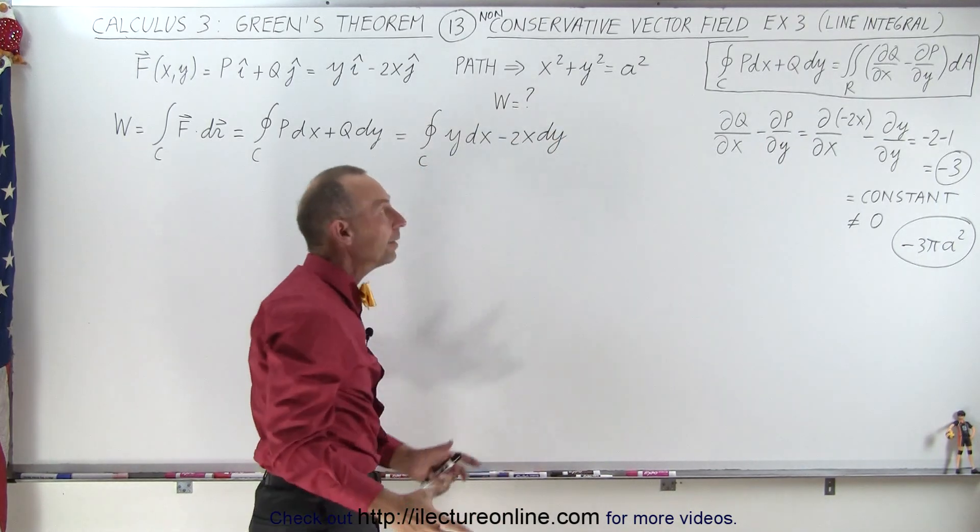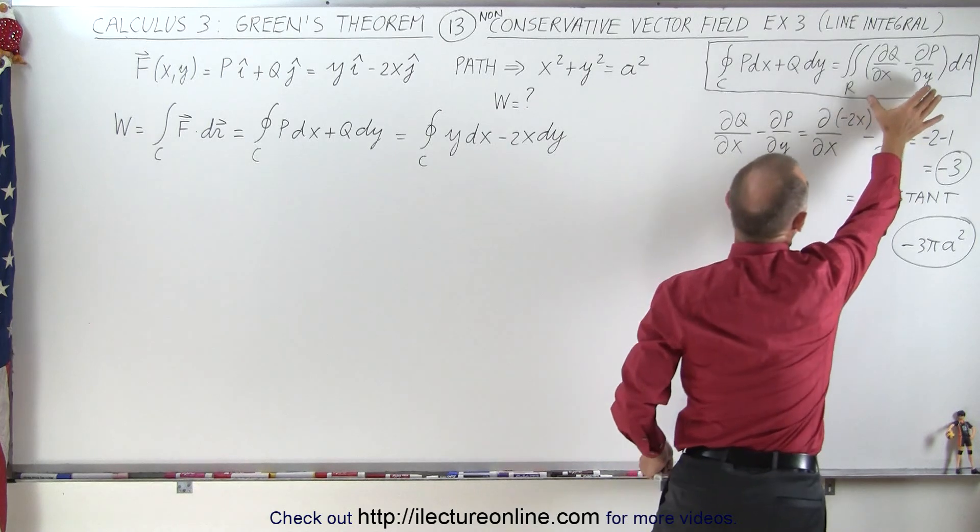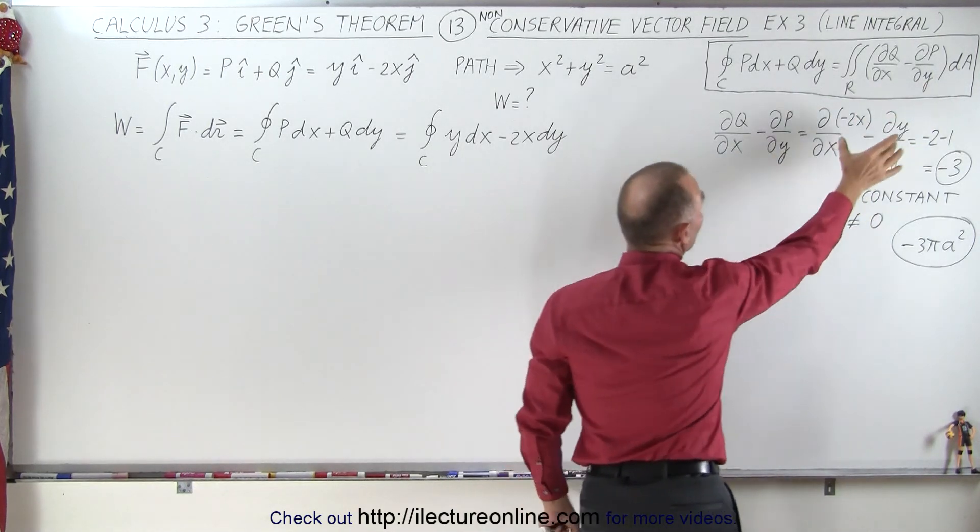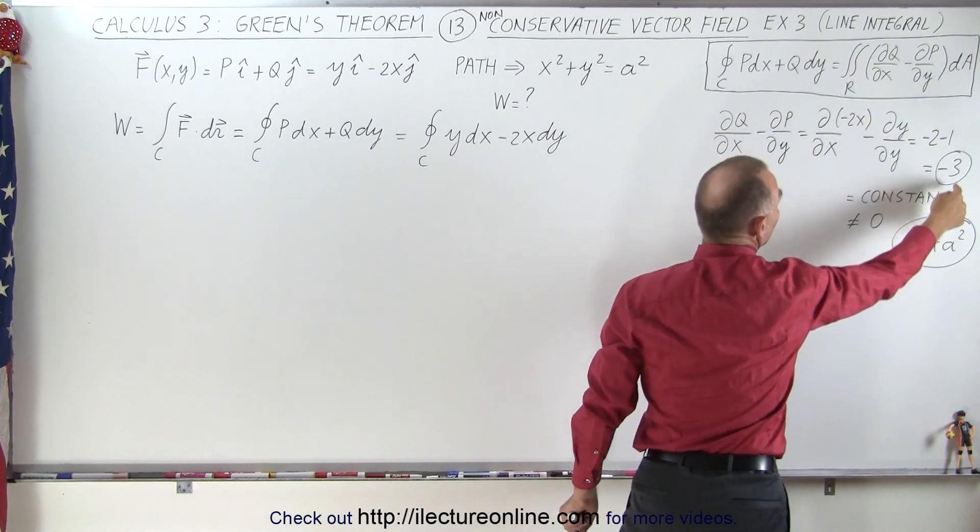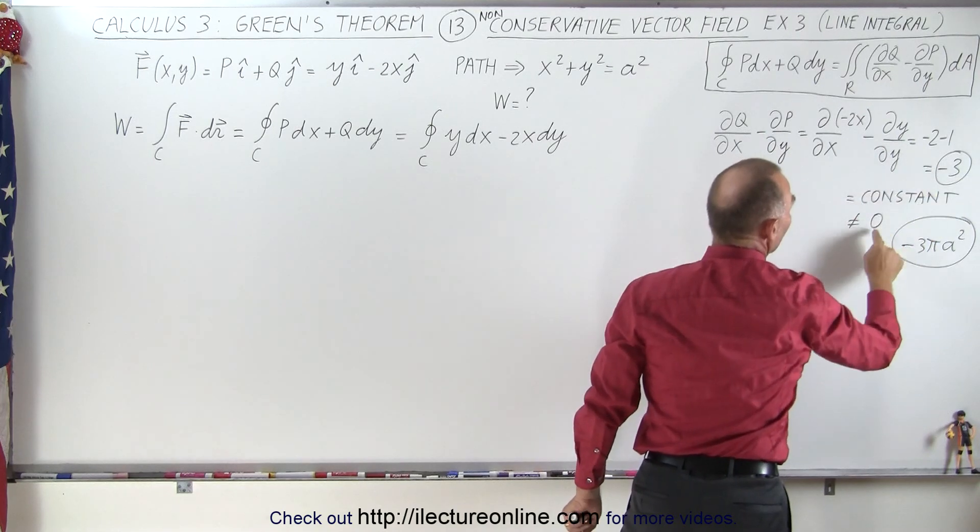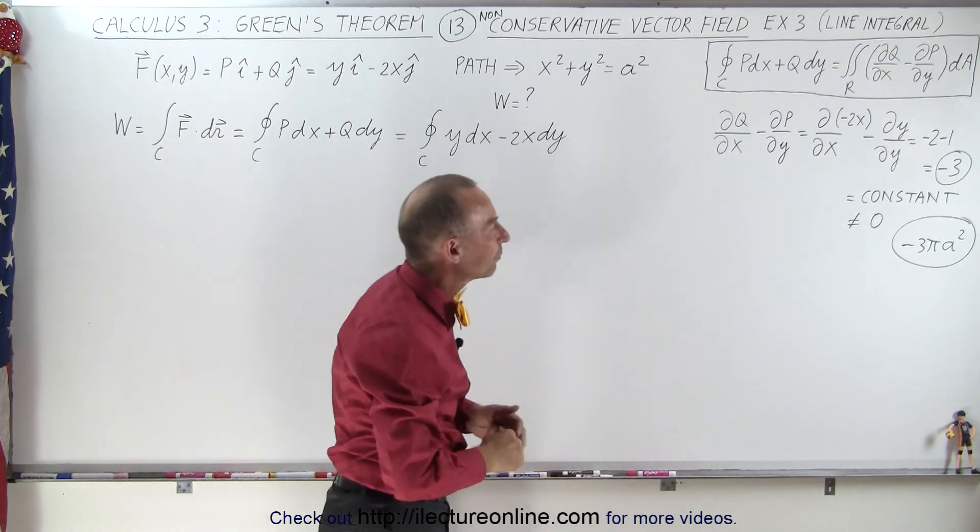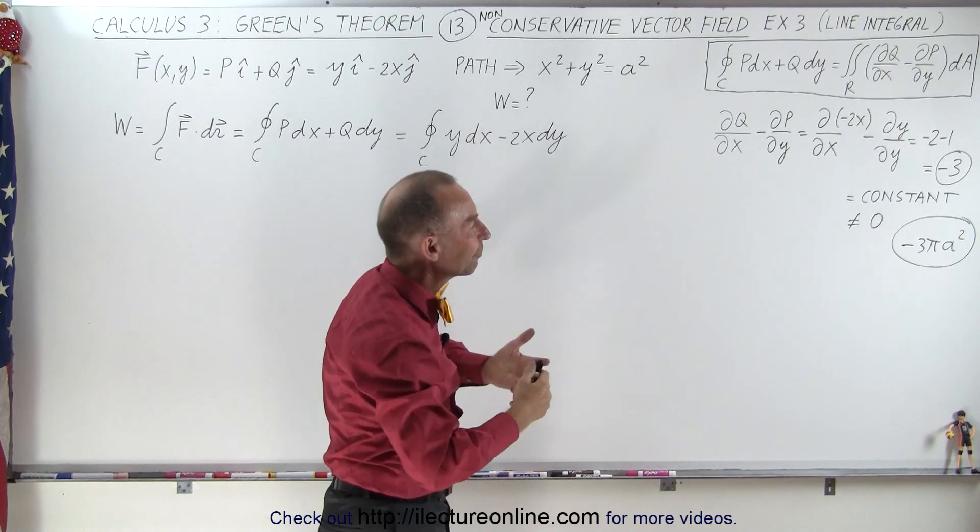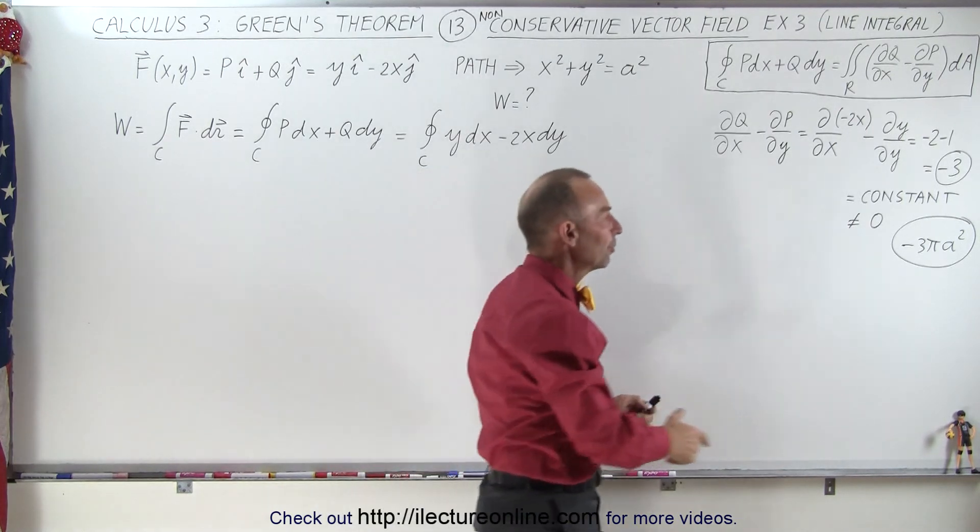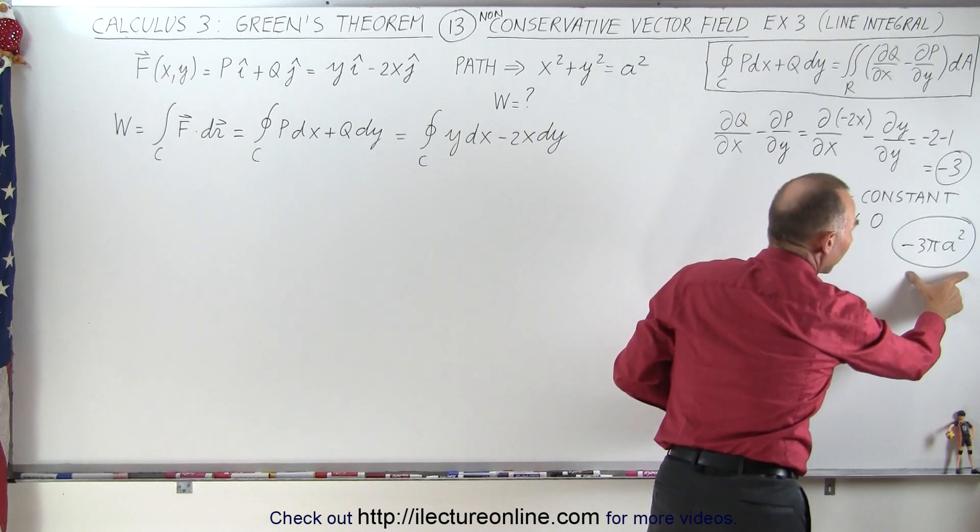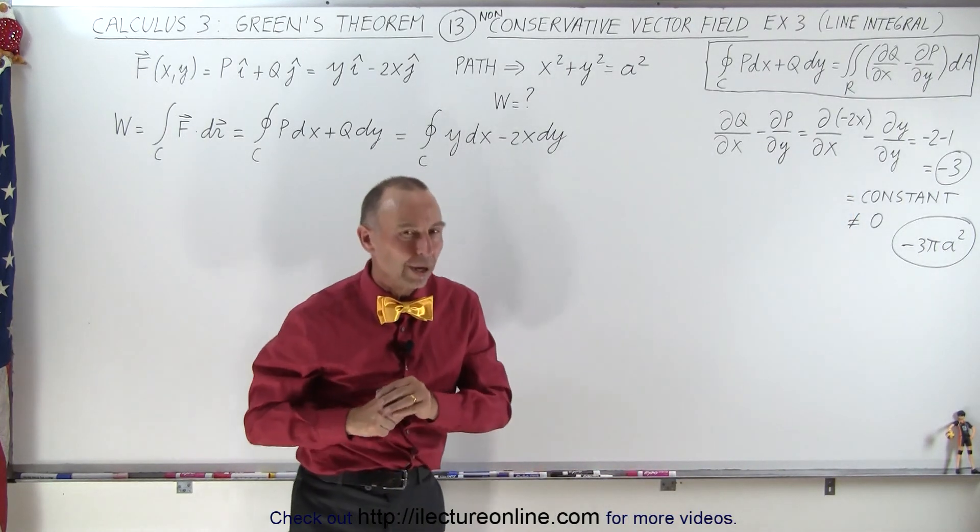So we tried to find the work done and we did that by solving the right side of Green's Theorem. We evaluated this component. It ended up being a constant not equal to zero. We realized this is a non-conservative vector field and therefore there was a number to be found equaling the work done and it ended up being minus 3 pi a squared.